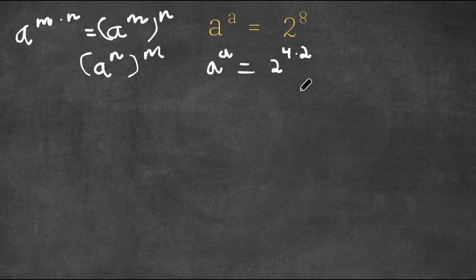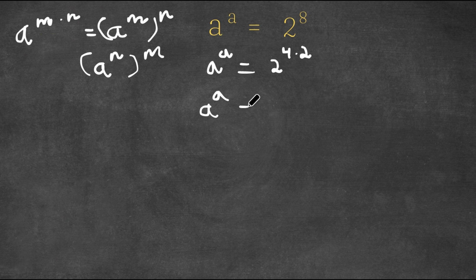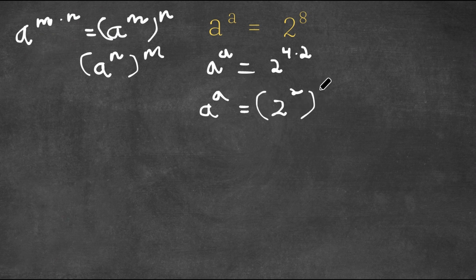So now I'm going to write this as a to the power of a is equal to 2 squared to the power of 4.